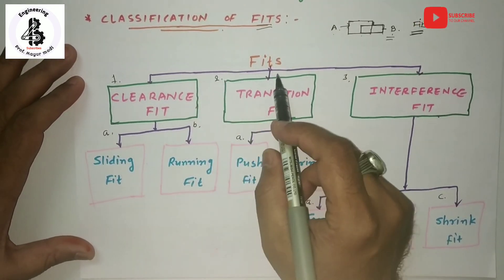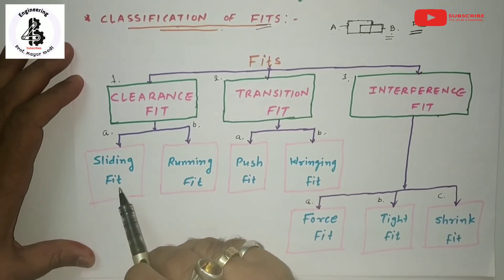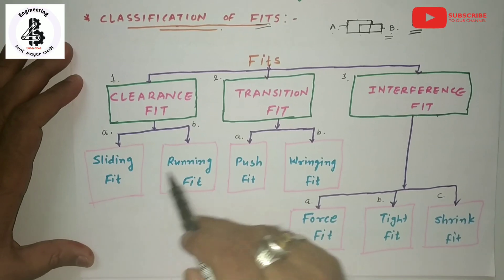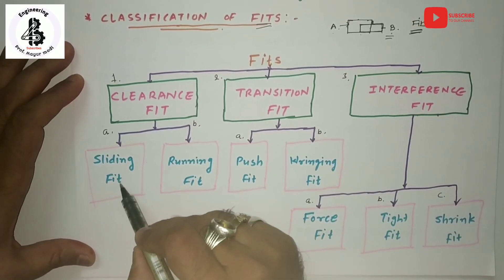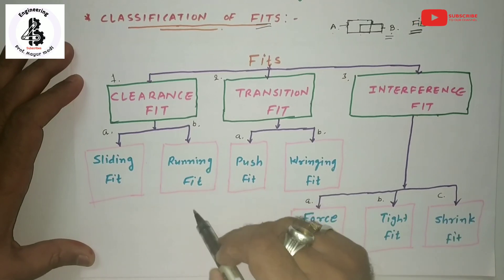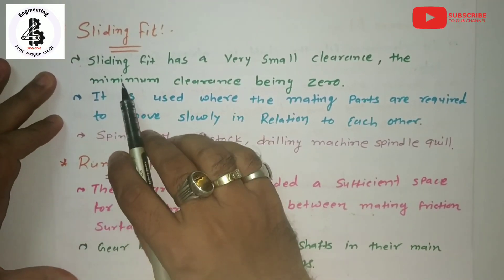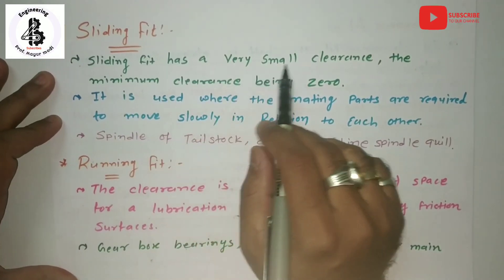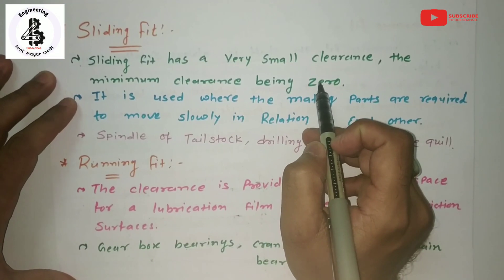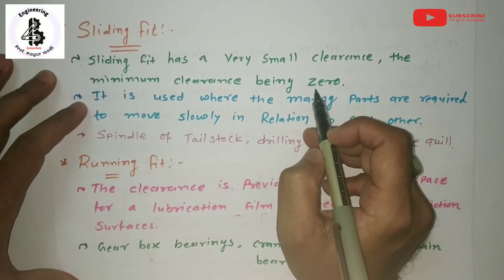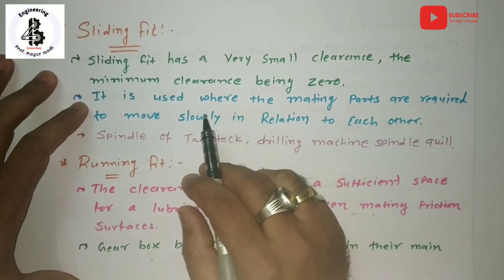According to the classification of fits, the clearance fit is sub-classified as sliding fit and running fit. For the sliding fit, it generally has a very small clearance, with the minimum clearance being zero. You can easily fit both components together by a sliding effect.